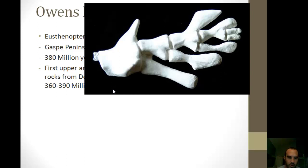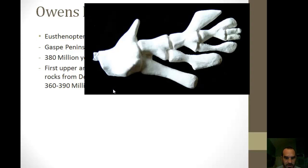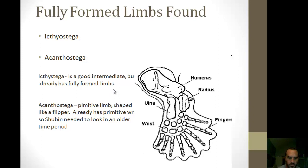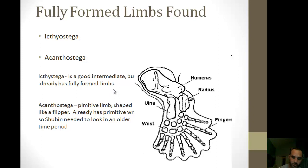Two other intermediate fish — Ichthyostega and Acanthostega — were good intermediates, but they already had fully formed limbs. Acanthostega had a primitive limb shaped like a flipper with an already primitive wrist, meaning it was already spending a lot of time on land. So Shubin had to go a little bit older, further back in time. If the fully formed arm already existed with Ichthyostega and Acanthostega, he needed to find a slightly older organism.